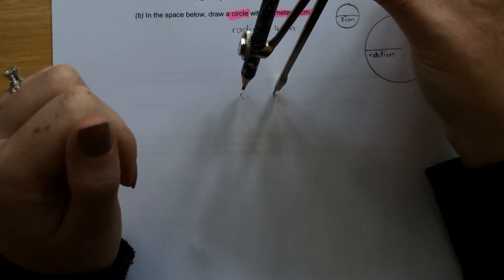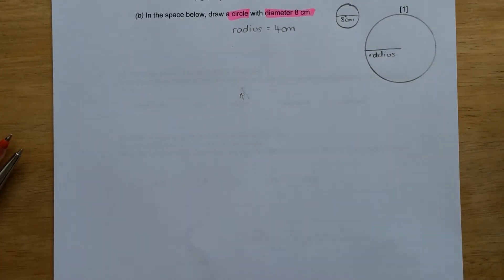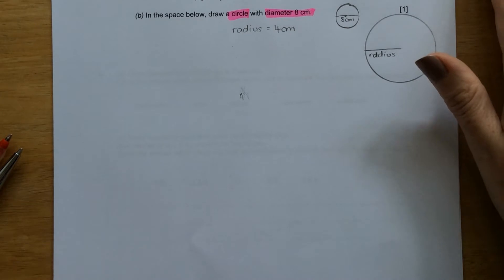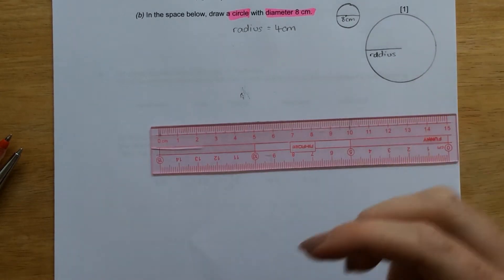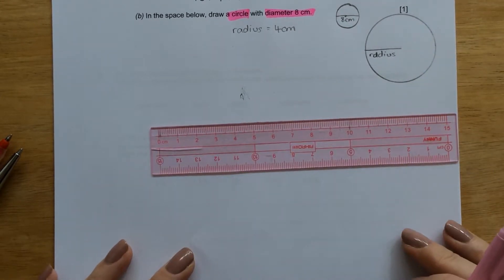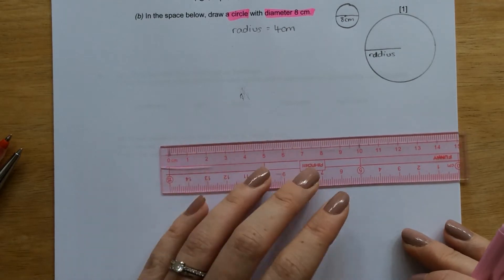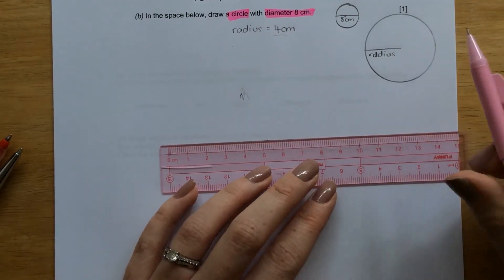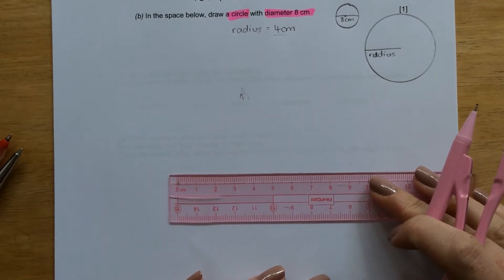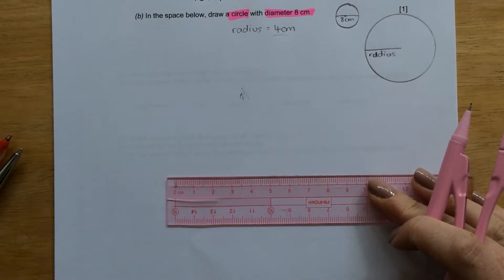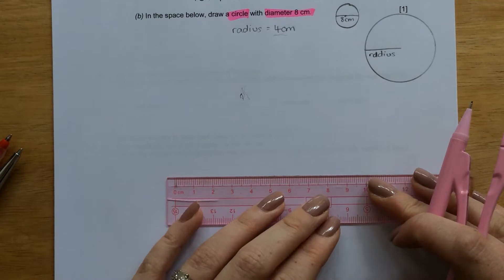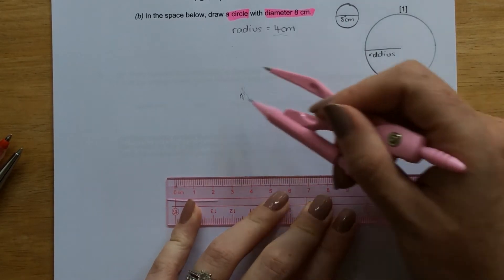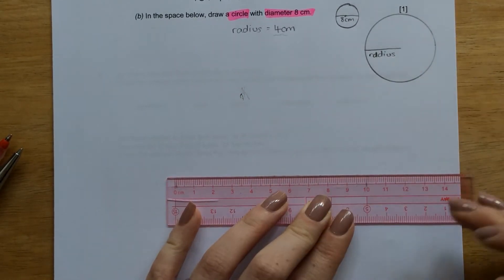So now you're going to measure the distance from the point of your compass to the pencil. So we said we needed to have a distance of 4 centimetres, so that would be the radius. So I'm going to put my ruler in the centre of the page, so I've got enough space around the page to draw my circle.